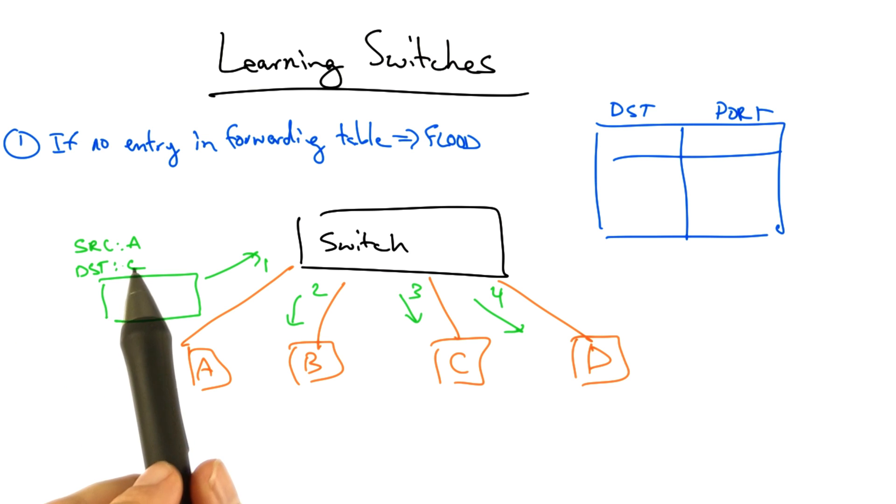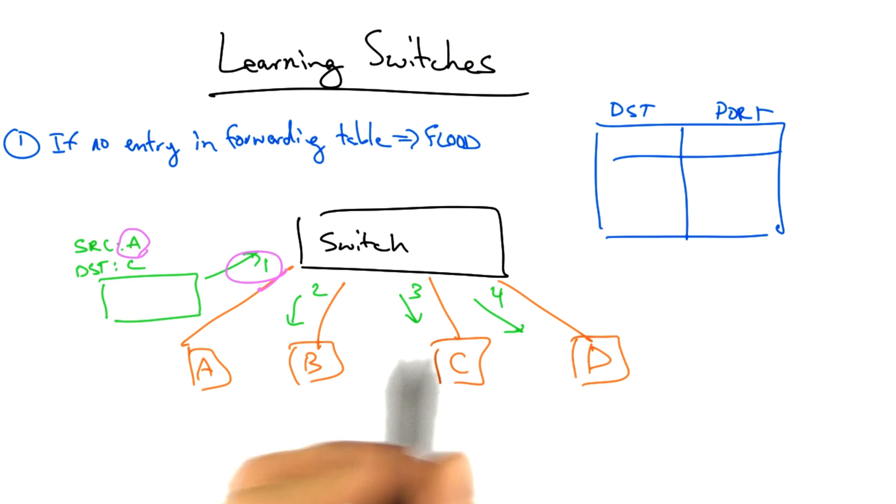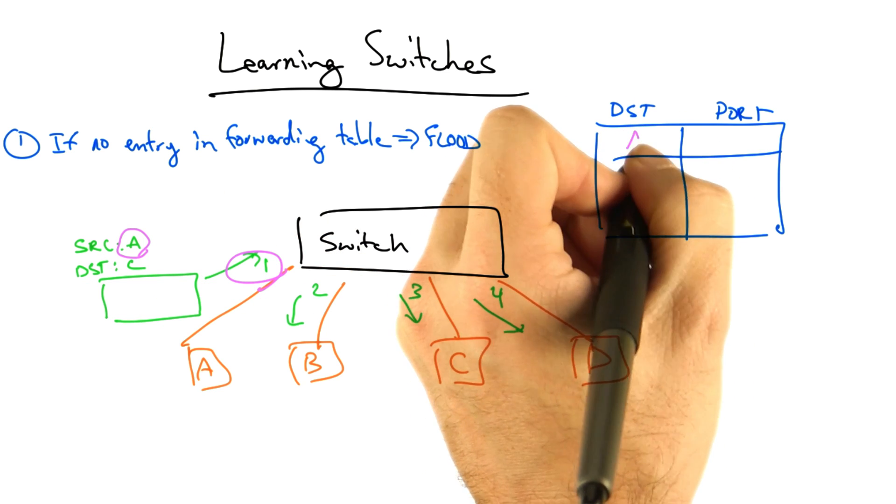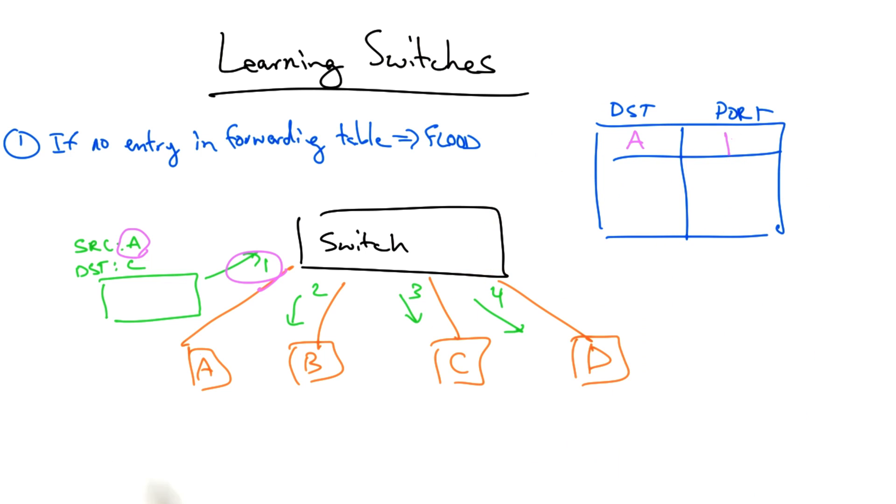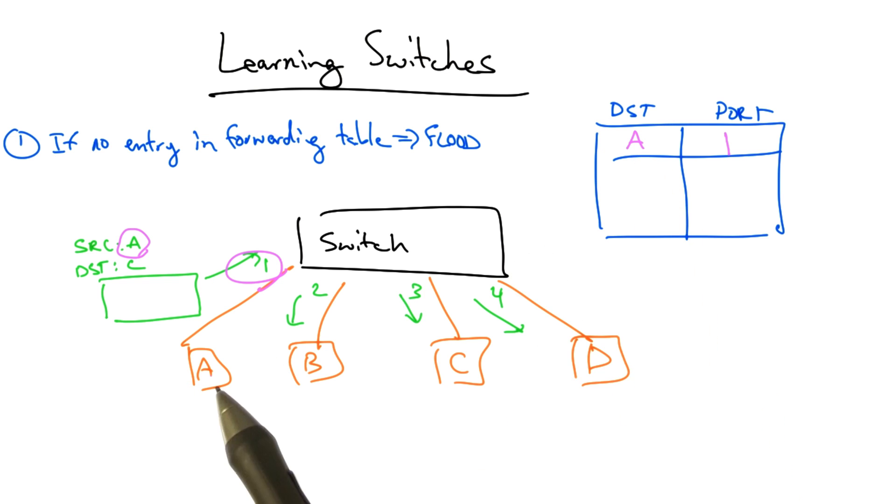On the other hand, because the frame has a source address of A and arrived on input port 1, the switch can now make an association between address A and port 1. In other words, it knows that the host with address A is attached to port 1. So that in future, when it sees frames destined for host A, it no longer needs to flood but can instead send the frames directly to port 1.